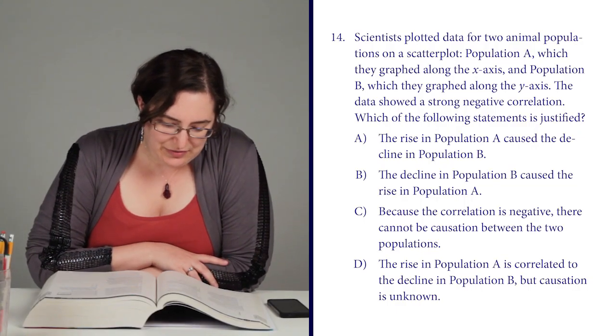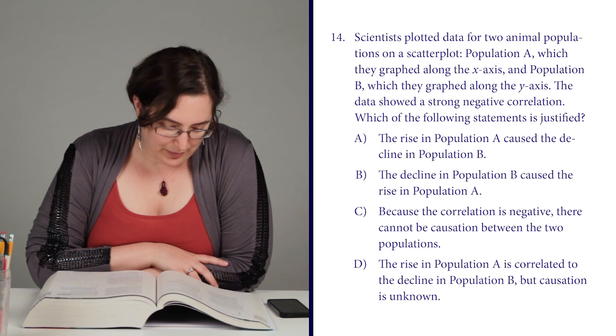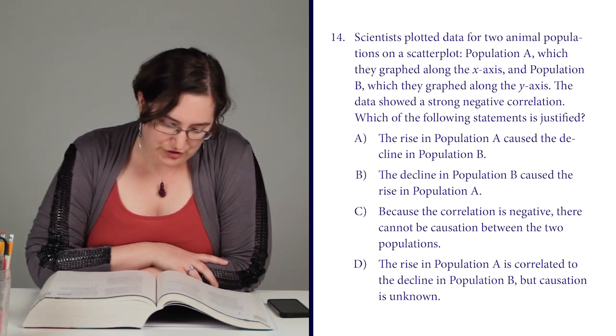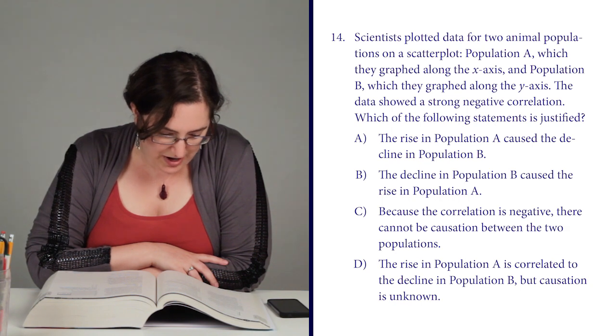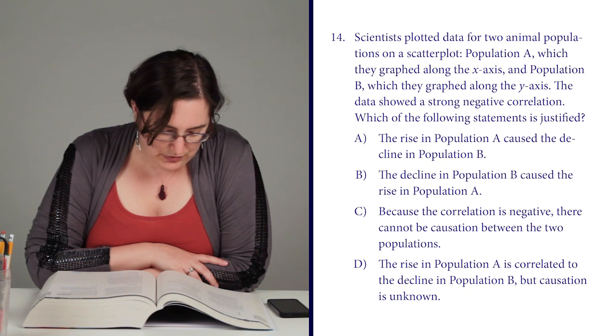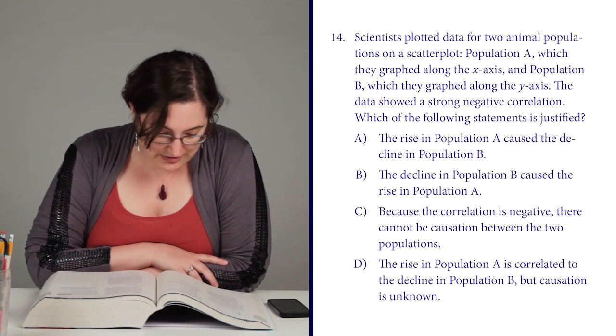Scientists plotted data for two animal populations on a scatterplot. Population A, which they graphed along the x-axis, and population B, which they graphed along the y-axis. The data showed a strong negative correlation. Which of the following statements is justified?